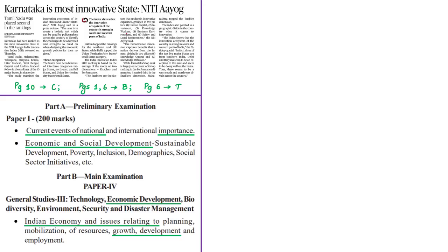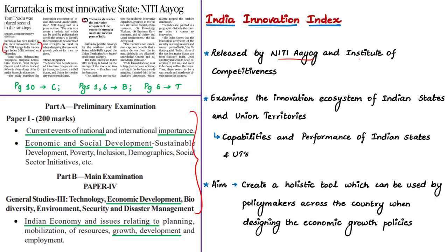The next news article is about the India Innovation Index. Know that this index is released by NITI Aayog along with the Institute for Competitiveness as the knowledge partner. The Institute for Competitiveness India is the Indian branch of the global network of the Institute for Strategy and Competitiveness at Harvard Business School — an international initiative centered in India. One of its functions is to provide advisory services to governments.